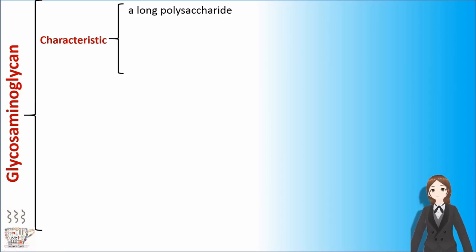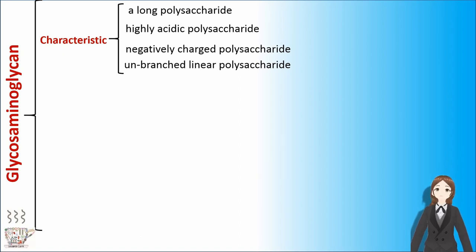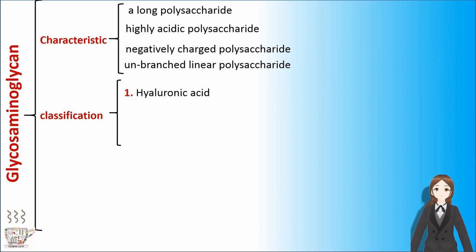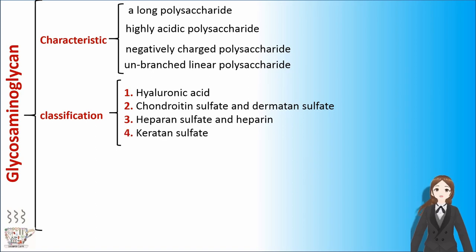Glycosaminoglycan is a long, highly acidic, negatively charged, and unbranched linear polysaccharide. It can be divided into four subgroups: hyaluronic acid; chondroitin sulfate and dermatan sulfate; heparan sulfate and heparin; and keratan sulfate.